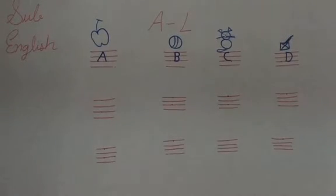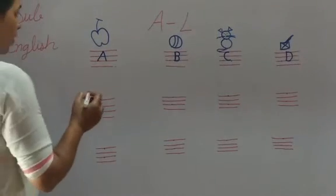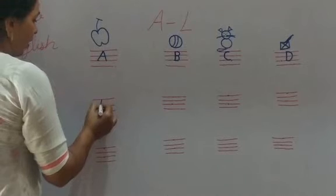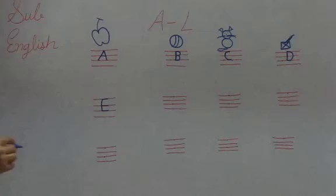Speak. A. A for apple. B. B for ball. C. C for cat. D. D for dog. Then, E. E for egg.